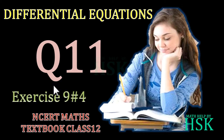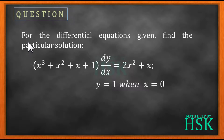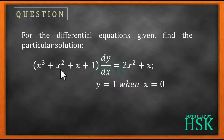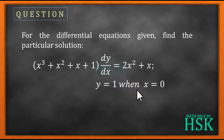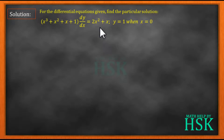Hello friends, in this video I'm going to take question number 11 of exercise 9.4 of the chapter differential equations from NCERT maths textbook class 12. The question asks us to find the particular solution. The equation is x³ + x² + x + 1 dy/dx = 2x² + x, and we are given that y = 1 when x = 0. Under this condition we have to calculate the particular solution.